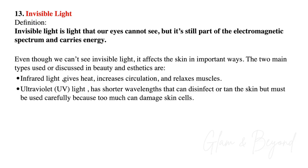We're on number thirteen, invisible light. Invisible light is light that our eyes cannot see, but it's still part of the electromagnetic spectrum and carries energy. Even though we can't see it, it affects the skin in important ways. The two main types used in beauty and aesthetics are infrared light, which gives heat, increases circulation, and relaxes muscles, and ultraviolet UV light, which has shorter wavelengths that can disinfect or tan the skin — but remember, it must be used carefully because too much can damage skin cells.